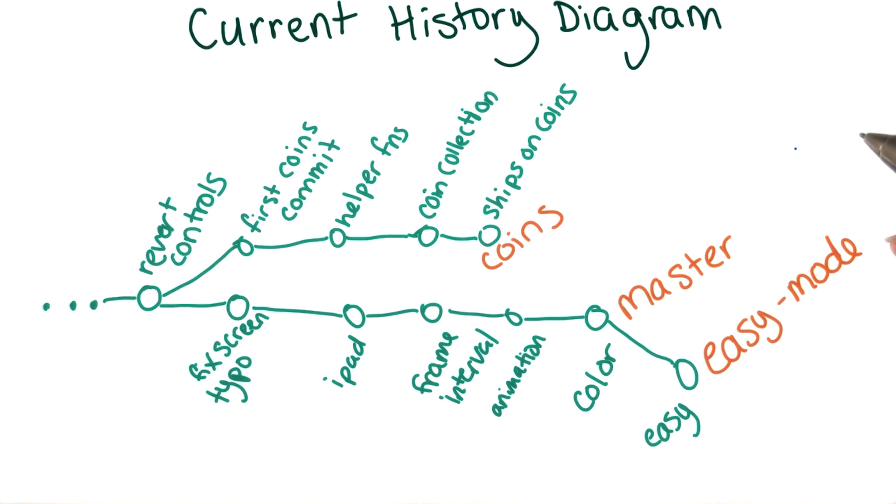You've seen git log output a few times now, and you know that it doesn't necessarily always show you every commit. So how does git log figure out which commits to show you?